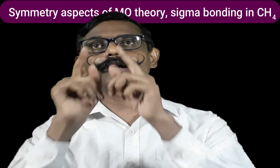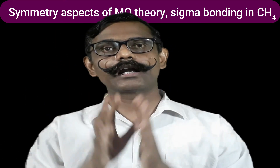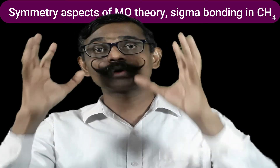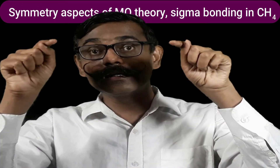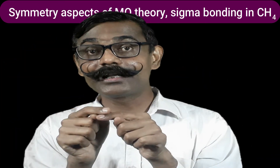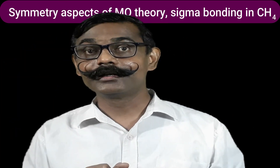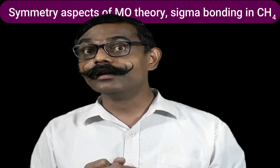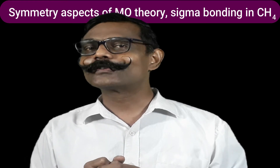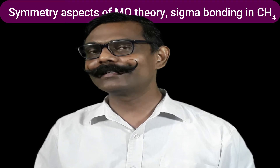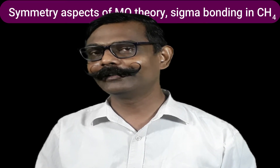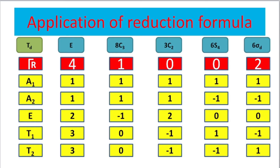Let us study the example of the methane molecule. Carbon is at the center and four hydrogens are around it. Those four hydrogens form a group. Those group orbitals will interact with the orbitals of the central atom, carbon. We are going to learn what possible symmetries can interact with the orbitals of carbon. Let us establish LCAOs for the methane molecule and symmetries of the orbitals of carbon.